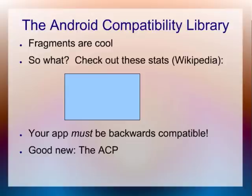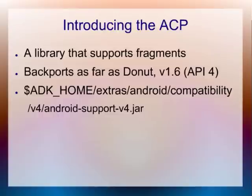Fortunately, Google realized that and they've produced the ACP — the Android Compatibility Library. It's a library that supports fragments. You can add it to your project and it supports all releases of Android back as far as Donut. You'll find it in your SDK installation in Extras > Android > Compatibility > V4. It's just a JAR file.